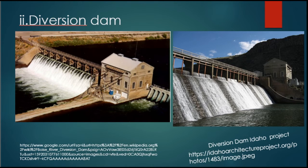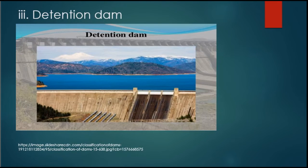The second type is the diversion dam. These are constructed to provide head for carrying water into a canal, tunnel, or any other conveyance system. Generally the height is very small and no reservoir is formed. They are used in run-of-river hydropower projects, irrigation, water supply, and other purposes.